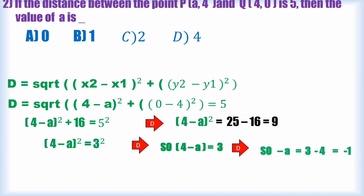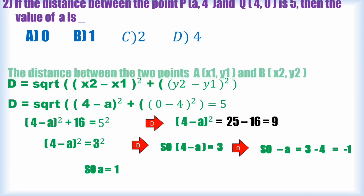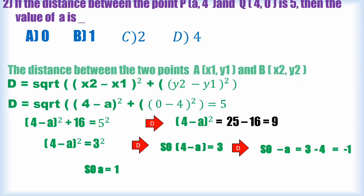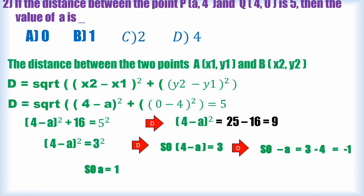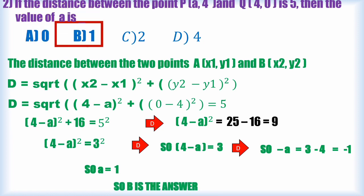So -a = -1, therefore a = 1. Option B is the correct answer. The distance is 5, and the x-coordinate of P is 1.